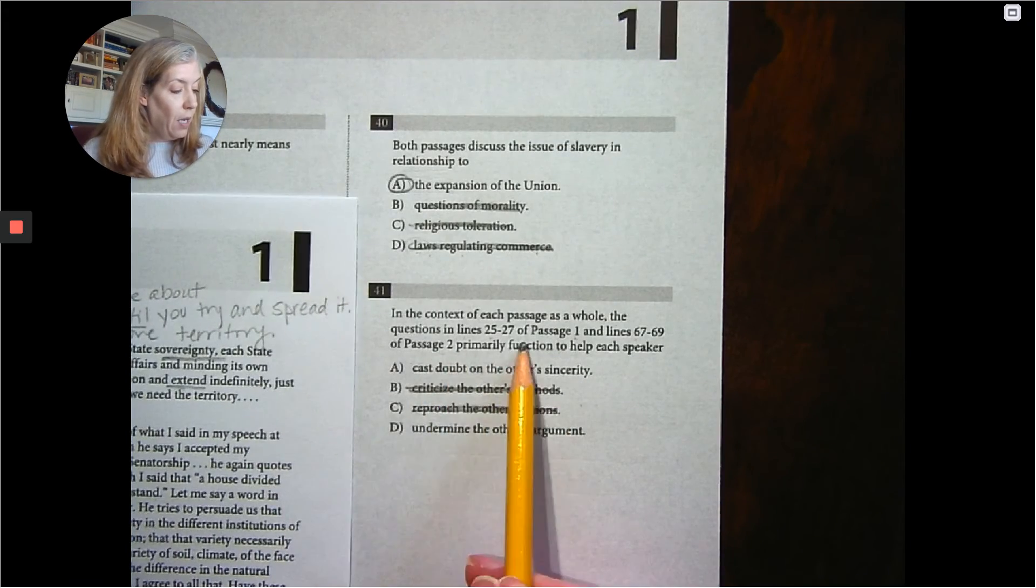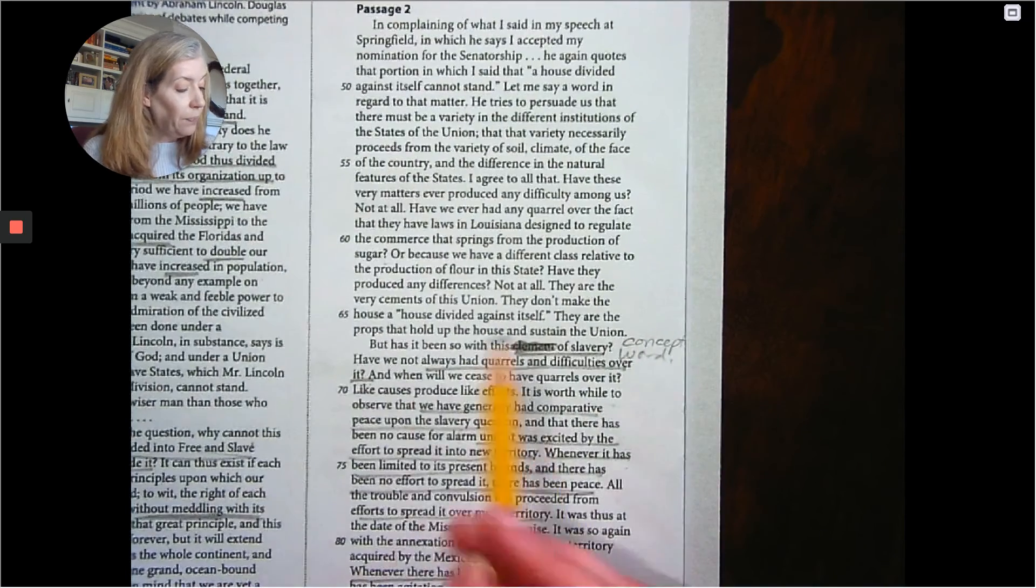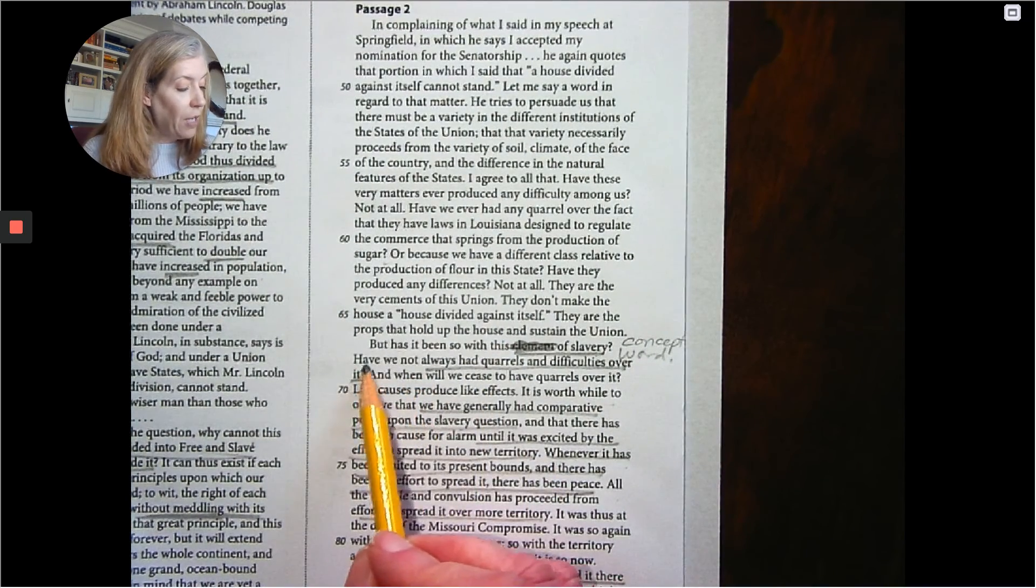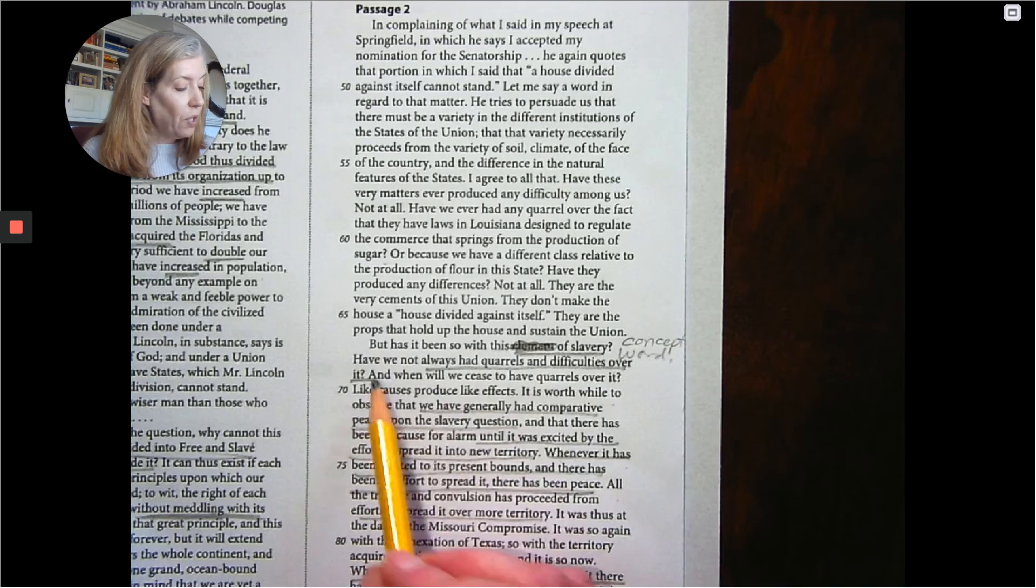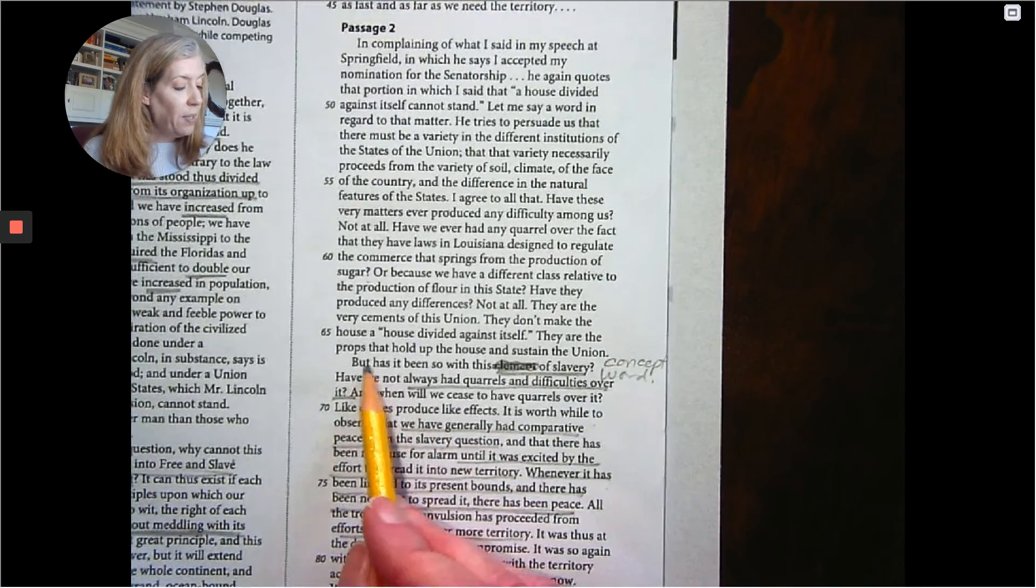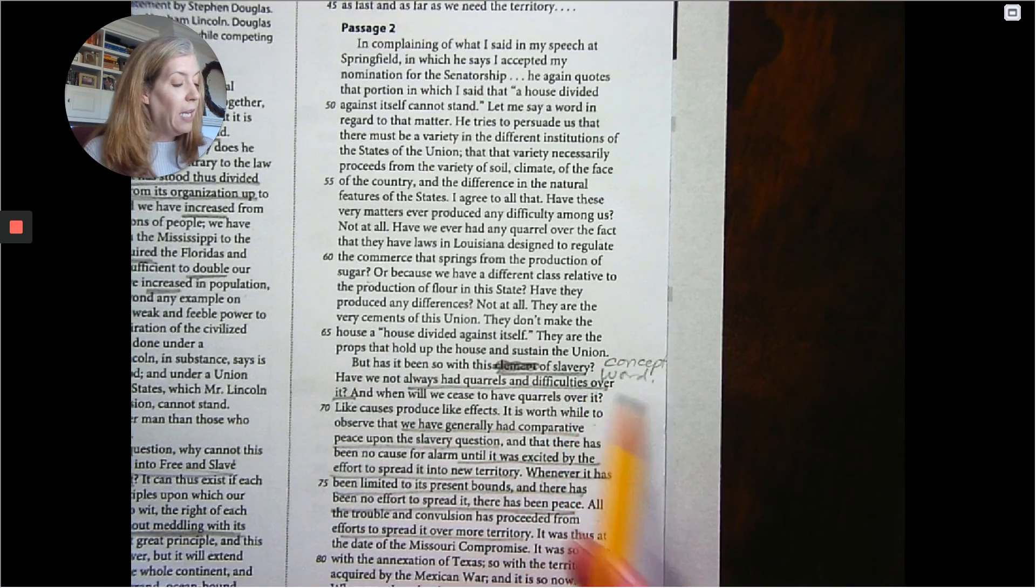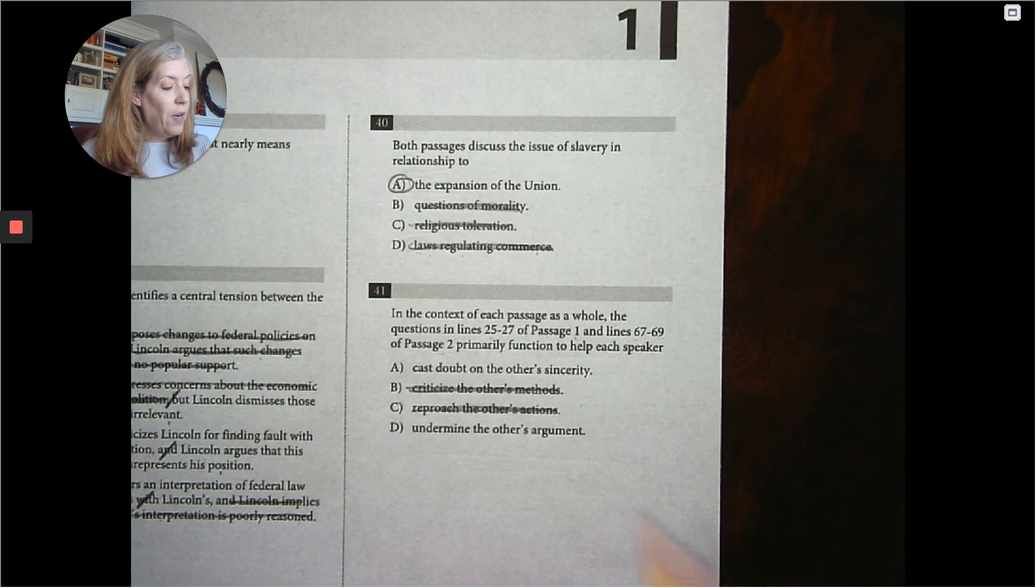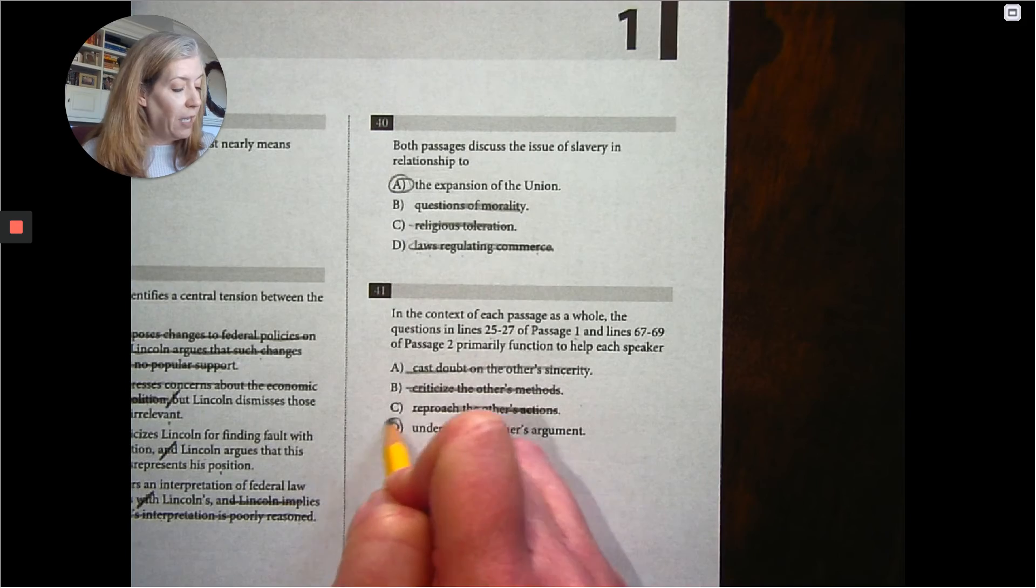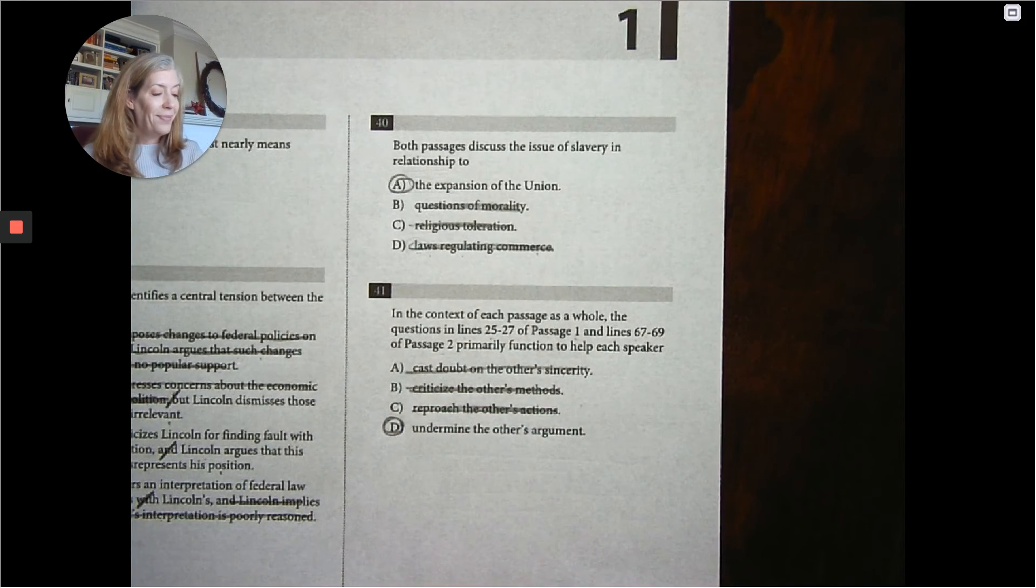Why cannot this union exist forever divided in free and slave states as our fathers made it? And then in 67 to 69. Have we not always had quarrels and difficulties over it? But has been so this element of slavery? Have we not always had quarrels and difficulties over it? They're not casting doubt on sincerity. They're undermining each other's argument.